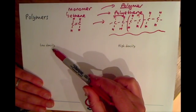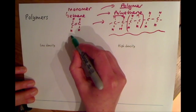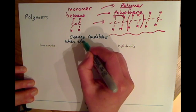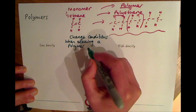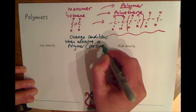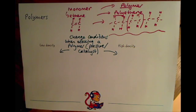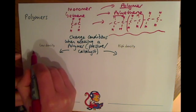We can have low density polymers and we can have high density polymers. By changing conditions such as heat, pressure, or the catalyst being used, you can make either a high density or a low density polymer. You don't need to know the exact conditions, but you do need to know that changing conditions like pressure or catalyst allows you to make high density or low density polyethene.